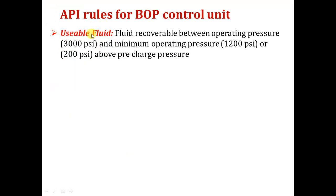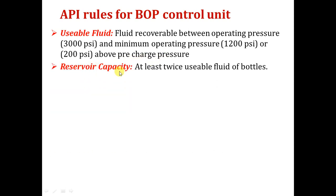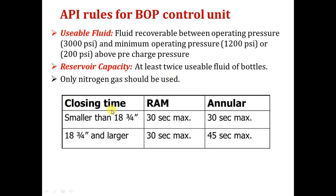The minimum number of accumulator cylinders is four. Per API, the unit can operate with up to one quarter of cylinders without pre-charge (e.g., if 16 cylinders, 4 may be unusable), but if more than a quarter are unusable the unit is not accepted. The reservoir capacity must be at least twice the usable fluid volume of the bottles. Closing time for all rams must not exceed 30 seconds. For the annular BOP: if smaller than 18¾ inches, closing time is less than 30 seconds; if larger, no more than 45 seconds.